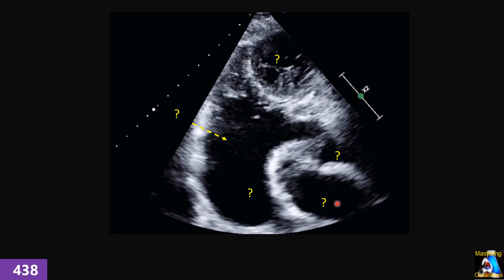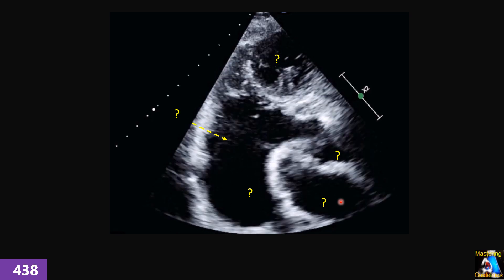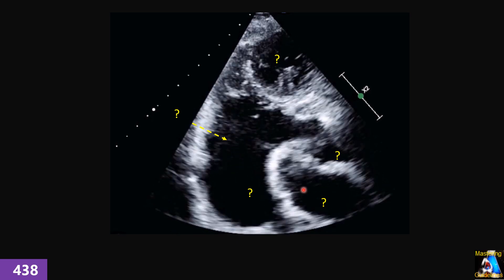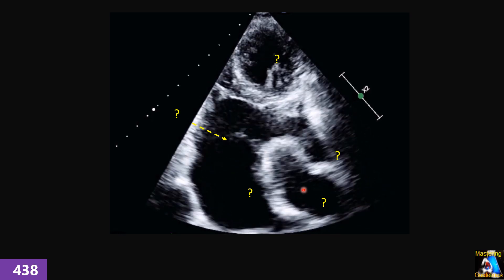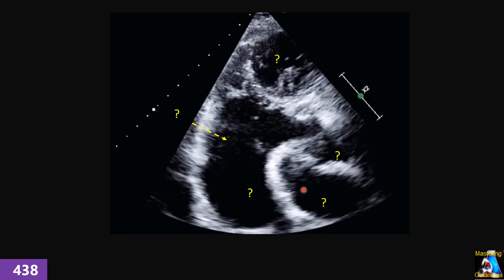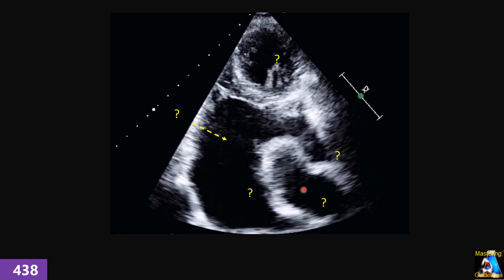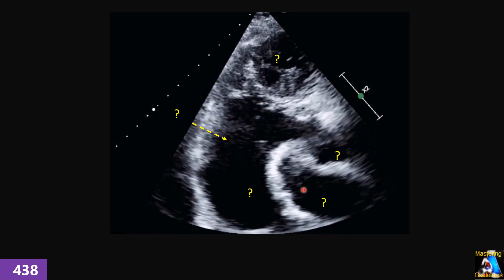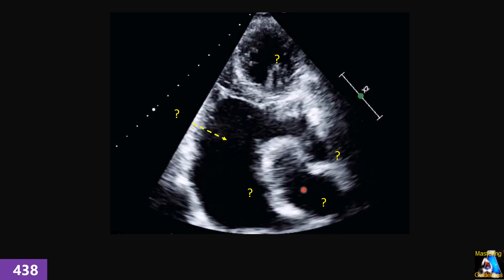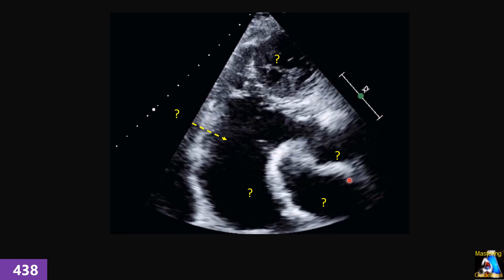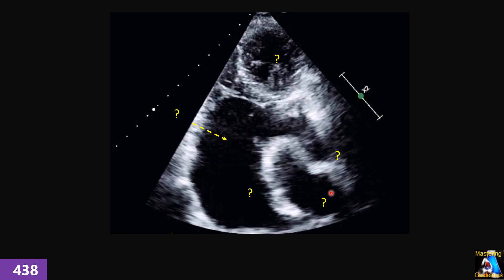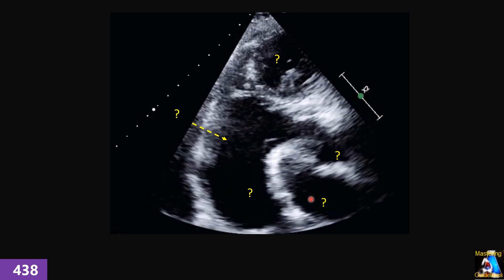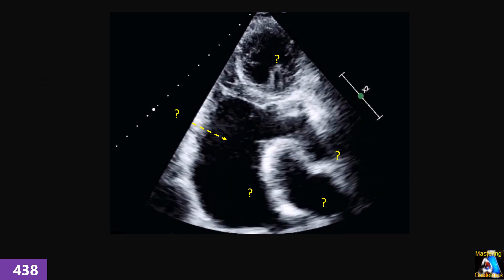And the last one — getting to Apical 2-chamber view. Not from scratch, not from the very beginning. Starting from this view, what maneuver or maneuvers do you have to perform to get the Apical 2-chamber view?